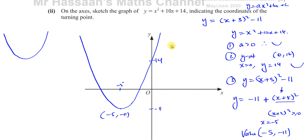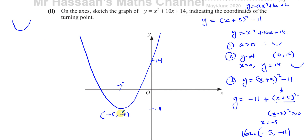The question doesn't ask for x-intercepts or y-intercepts specifically. For the three marks, one is likely for the correct minimum shape, one for the vertex being correctly placed in the third quadrant at (−5, −11), and one for the graph crossing the y-axis at 14 and crossing the x-axis twice on the negative side.